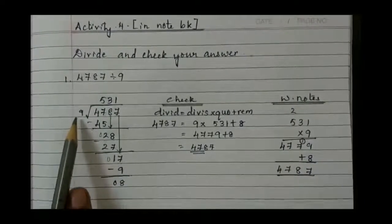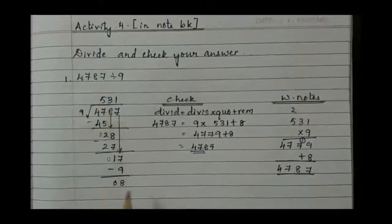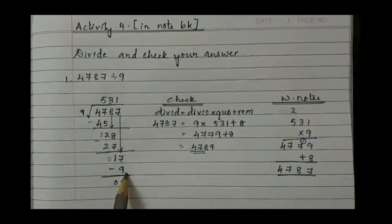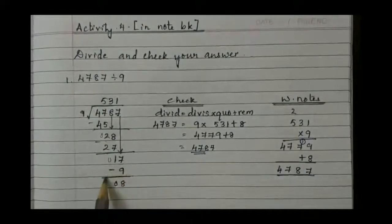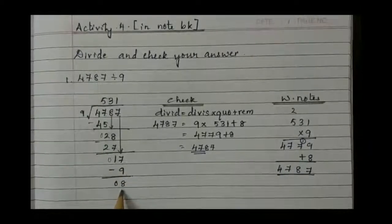There is no 17, so take less than it. 9 times 1 is 9. So 17 minus 9 is 8.